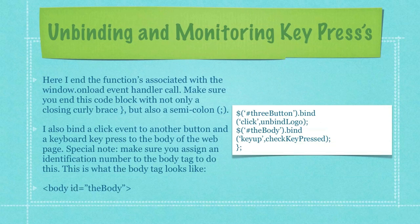Here, I end the functions associated with the window.unload event handler call. Make sure you end this code block with not only a closing curly brace, but also a semicolon, because this is a common error people make. I also bind a click event to another button, and a keyboard key pressed to the body of the web page. Special note: make sure you assign an identification number to the body tag to be able to do this, and this is what the body tag would look like with the identification code attached to it.